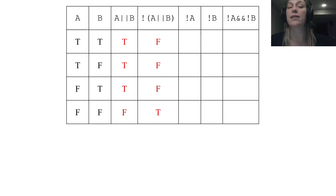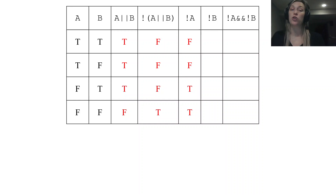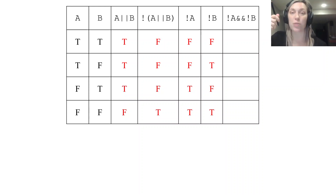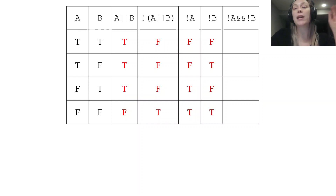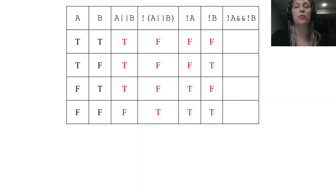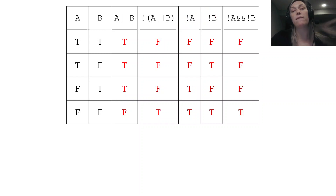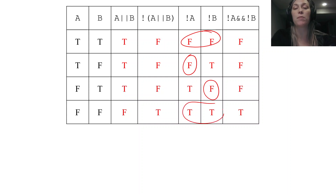Next I have not A — I look at my A column and switch those logical values to false, false, true, true. Then I have not B — same thing, I take the B column and switch those logical expressions. And then in my last column I have not A and not B, so I take those last two columns and compare them using the and operator. That evaluates to false if one or both is false, and true only when both are true.